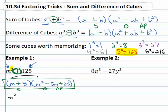m times m² is m³, m times -5m is -5m², m times 25 is +25m. 5 times m² is +5m², 5 times -5m is -25m.